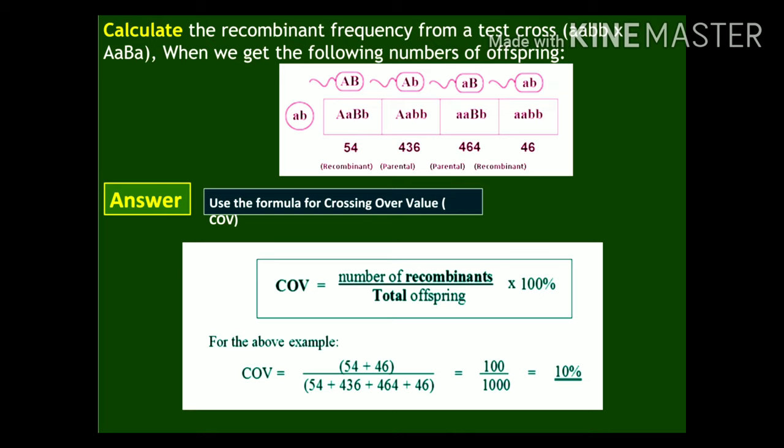Hereby I am concluding the topic of chromosomal theory of inheritance. What we have seen in this lecture is Morgan's experiments covering linkage, recombination, map units, centimorgans, and numerical examples. I will see you in the next lecture. Have a nice time.